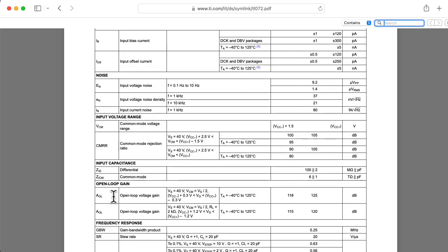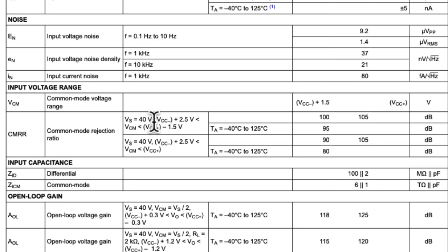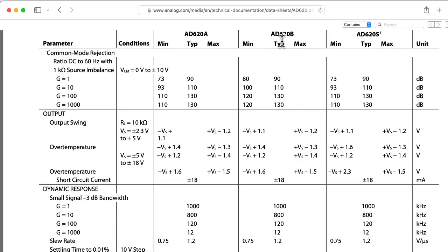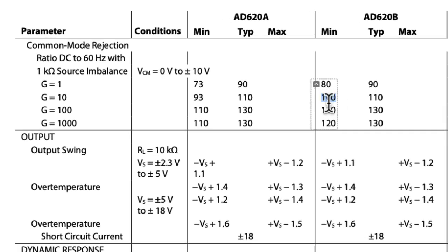The TL072 data sheet lists common mode rejection ratios under different operating conditions. But in both operating conditions, it lists a typical CMRR of 105 decibels. The AD620 by Analog Devices isn't an op amp. It's called an instrumentation amplifier, and it's an amplifier that has differential inputs where you set the gain with a choice of resistor. Now, if we take a look at the CMRR, we see that for one of the models, the AD620B, it offers at least 100 decibels of CMRR for a gain of 10, with 110 being typical. And at higher gains, you can get, say, 120 dB minimal with 130 being typical.